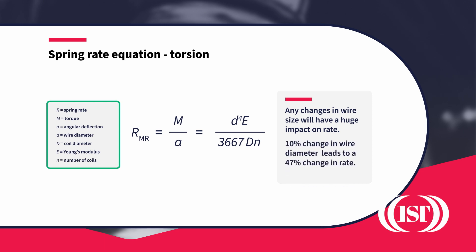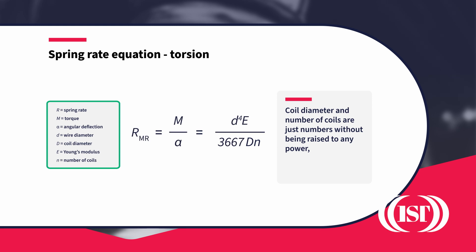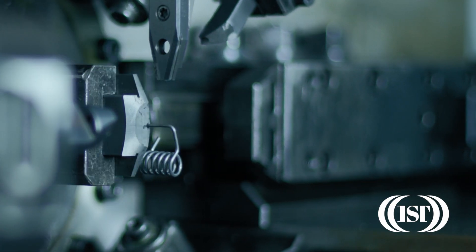In fact, a 10% change in wire diameter leads to a 47% change in rate, so it's really important to get the wire size right. Coil diameter and number of coils are just numbers without being raised to any power, so a 10% change here gives a 10% change in rate. One thing to be careful of is that this equation does not take into account the deflection of the legs, which will decrease the rate.